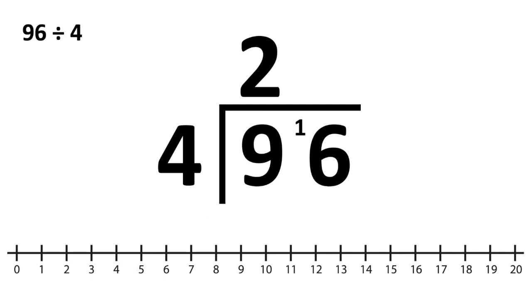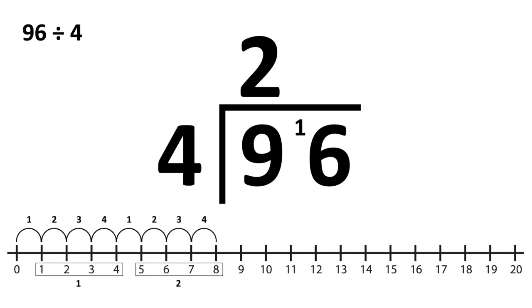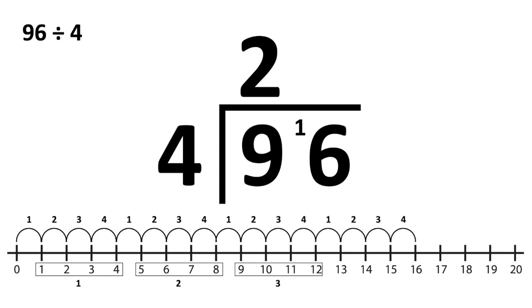And how many did we have left over? 1. So we carry this over into our 1s column. Next, we need to work out how many 4s go into 16. Counting up: one group, two groups, three groups, four groups. So 4 goes into 16 four times exactly. Therefore, our answer is 96 divided by 4 equals 24.